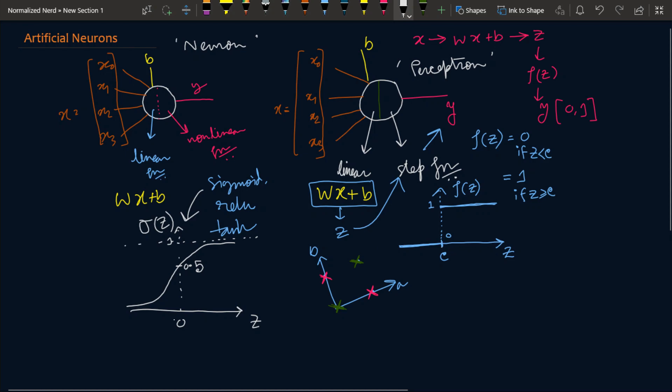Because of this non-linearity we can actually solve the XOR problem with our neuron, the artificial neuron, because it can learn non-linear functions and produce non-linear boundaries. But with the perceptron we couldn't have done it.